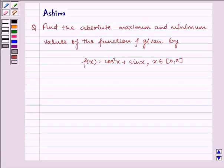Hello and welcome to the session. Let us understand the following question which says find the absolute maximum and minimum values of the function f given by f(x) equals cos²x plus sin x where x belongs to the closed interval [0, π].